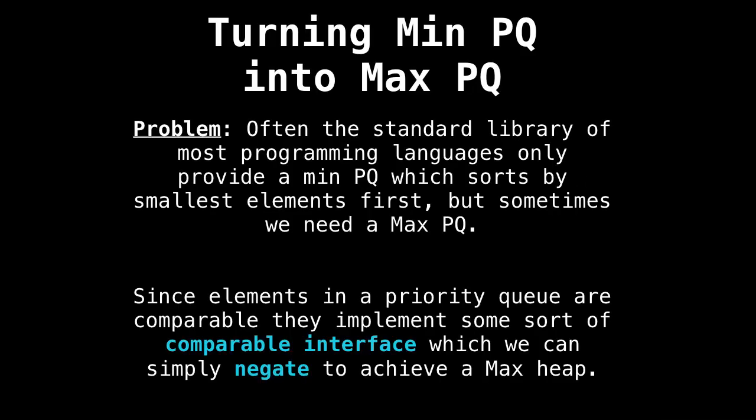So you may already be asking yourself, why is it important that I know how to convert a min priority queue into a max priority queue? Well, here's the problem. Often in the standard library of most programming languages, they will only provide you with either a max priority queue or a min priority queue. Usually it's a min priority queue, which sorts elements by the smallest element first. But sometimes we need the max priority queue depending on what we're programming.